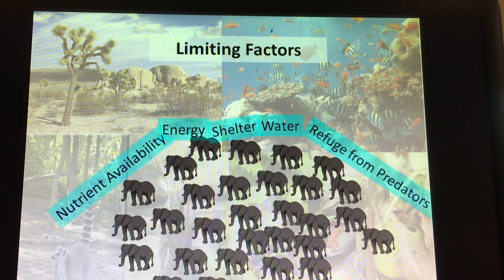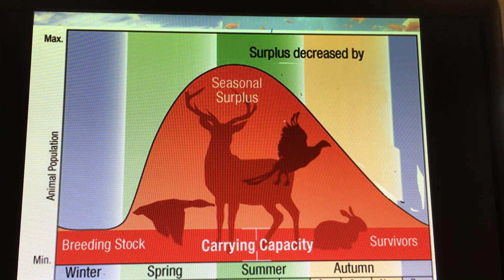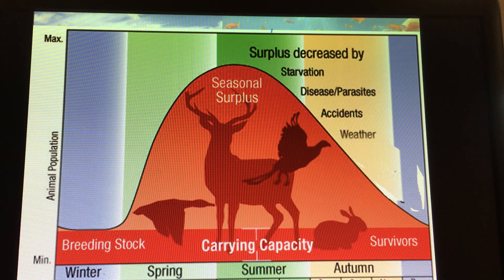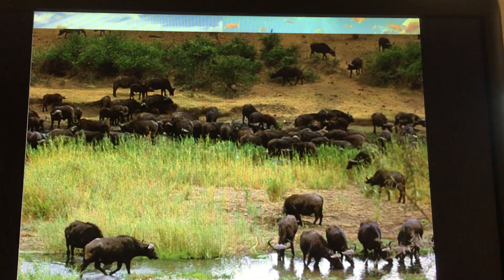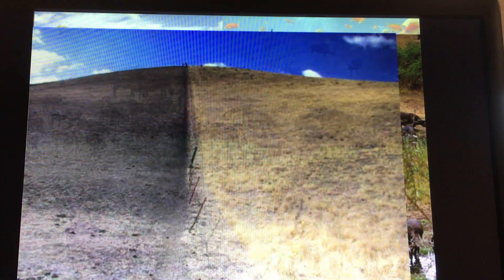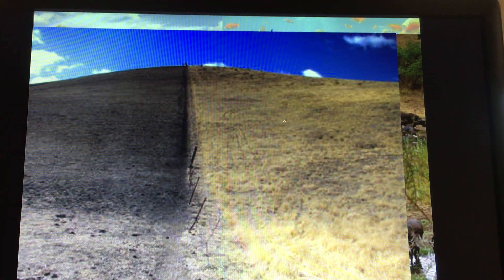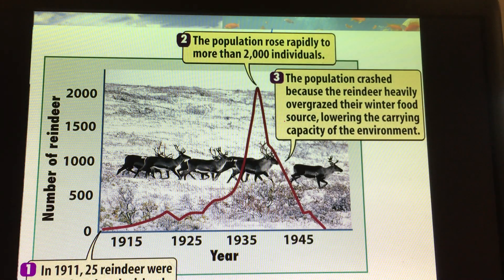A lot of limiting factors are the things that prevent exponential growth. You can have exponential growth, but it is going to be decreased by these limiting factors. For example, if you look at buffalo or wildebeest grazing — here is a hillside that had a fence down the middle. You can see on the left there was overgrazing; on the right, what it would look like normally. So animals, as a population grows exponentially, tend to overgraze — especially herbivores — and then you have a population crash.